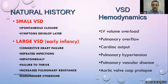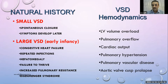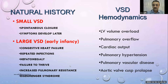Looking at the natural history of VSDs: small VSDs either close spontaneously or present asymptomatically, or symptoms may develop later in life, even into childbearing age especially in female patients. Large VSDs present with repeated chest infections, hepatomegaly as a sign of heart failure, and failure to thrive. Eventually, pulmonary pressure increases, the shunt reverses to right-to-left, and Eisenmenger physiology develops.